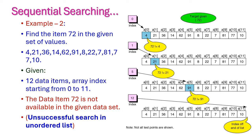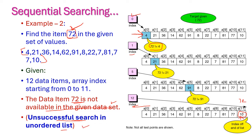In the same example, let us find another number: 72. We need to check whether 72 is available in the given list or not. The same procedure is followed — the index starts from 0, and the value 72 is not 4, so the index increments. Likewise, the index is incremented up to 11. The value 10 is not 72. Hence, the data item 72 is not available in the given data set. This is an unsuccessful search in the unordered list.